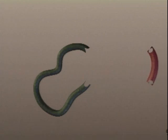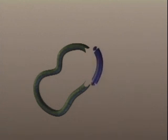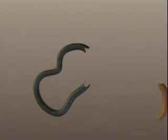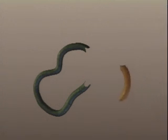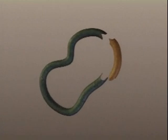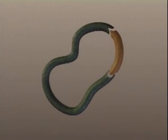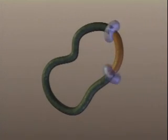A section of foreign DNA with the appropriate bases on its own sticky ends can bind to the plasmid, and DNA ligase helps join the ends. The result is recombinant DNA.